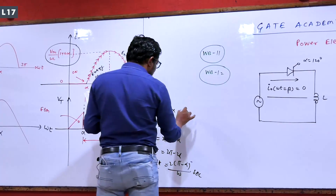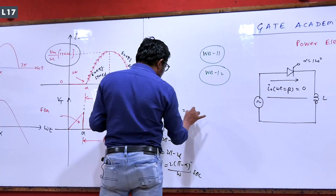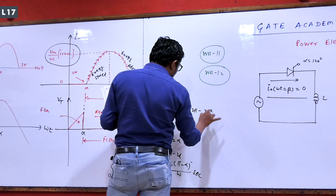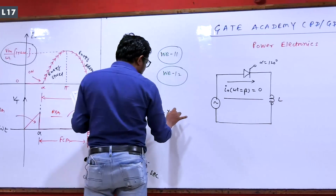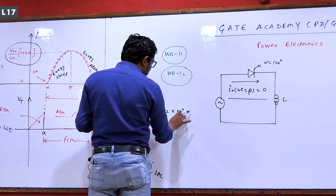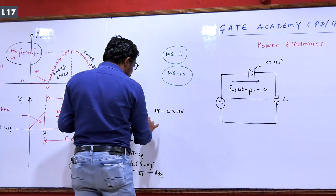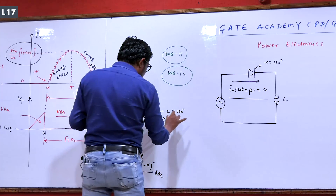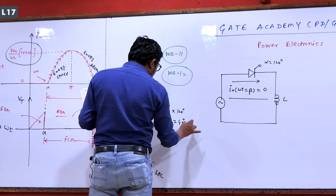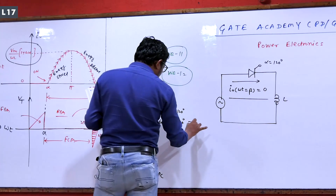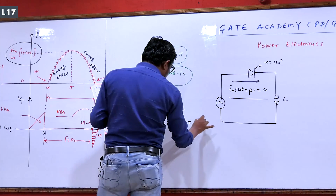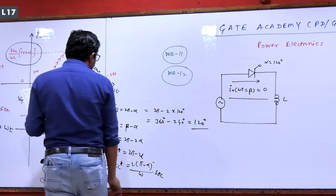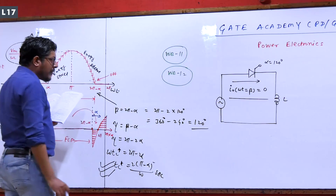The omega-t value of beta equals 2π minus alpha. If I put 2π minus alpha, that gives 2π minus 2α... and with alpha equal to 120 degrees — converting to degrees: 360 minus 2 times 120 gives 360 minus 240, which equals 120. So the value becomes 360 minus 120, which is 240 degrees.